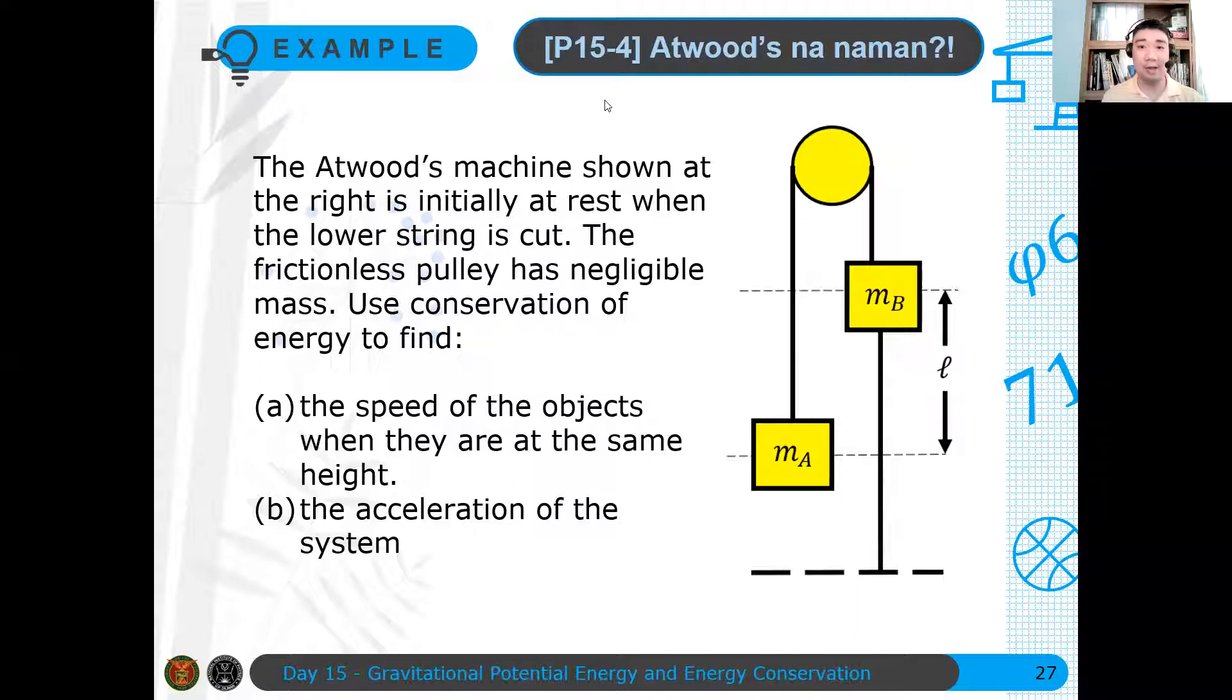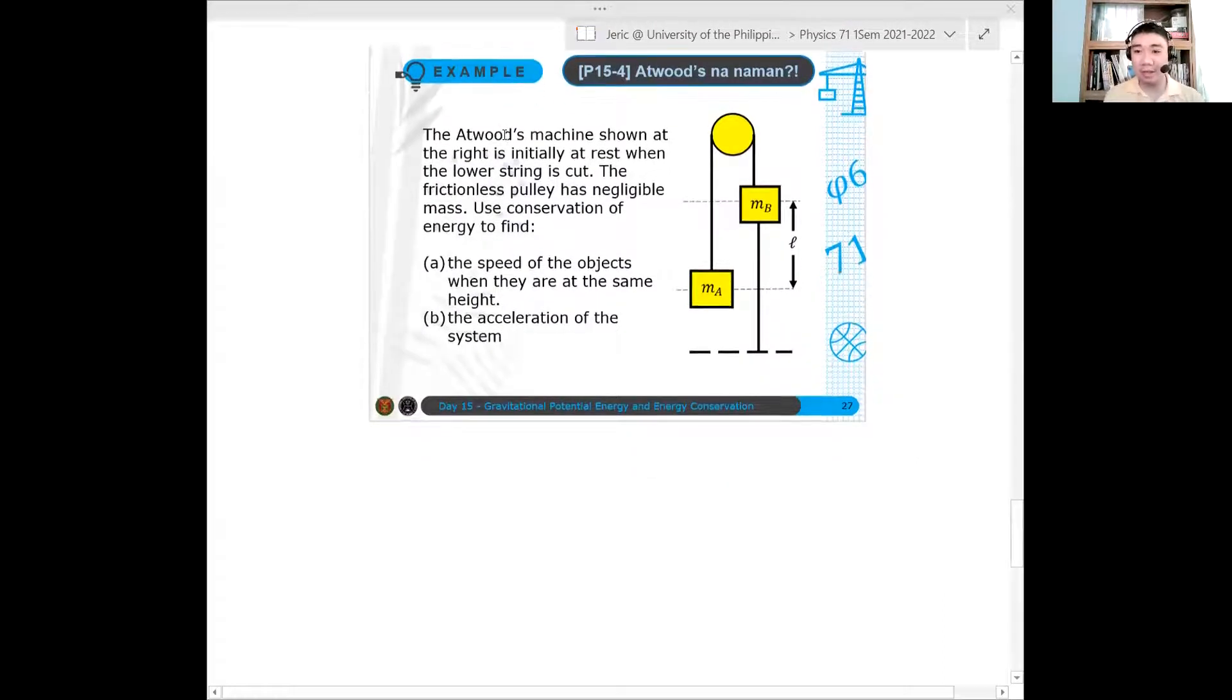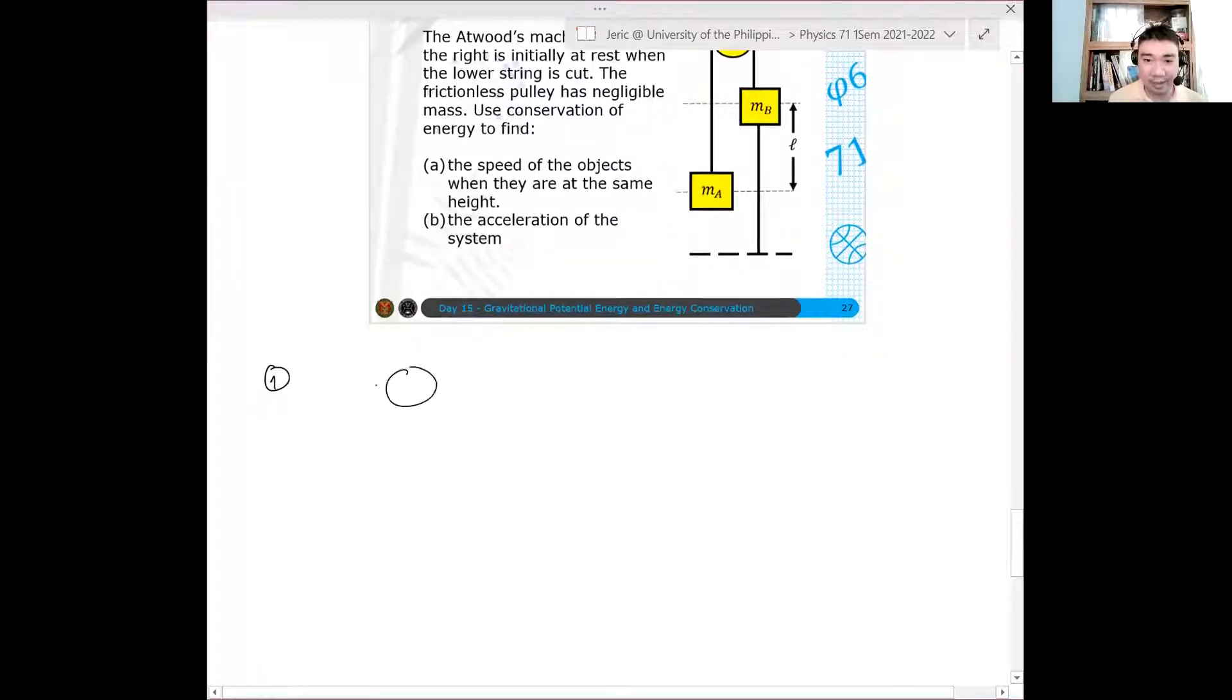I'll just show you the solution for this problem. So again, we have an Atwood's machine shown at the right. This particular initial configuration is our state 1. So state 1, you have an Atwood's machine. I'll redraw it. It's easier if I redraw. So you have an Atwood's machine initially at this position. MA is the first mass at this position. The second mass is at another position. This is MB.